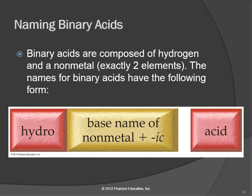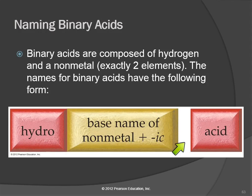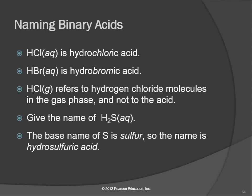Let's look at the binary acids first. These are hydrogen and a nonmetal, and their names take this form: we take the base name of the nonmetal, change the ending to '-ic' — so chlorine becomes chloric, nitrogen becomes nitric — and then we add the word 'acid' at the end. Before the base name, we have the prefix 'hydro' for hydrogen. So HCl becomes hydrochloric acid: two elements, hydrogen and chlorine, change the ending to '-ic', put 'hydro' in front — hydrochloric acid.